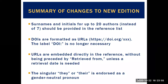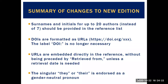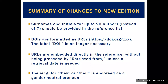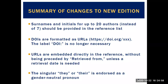In the reference list, you want to put names and initials for up to 20 authors, instead of the previous limit of seven. So while you can shorten in-text citations, at the end of the paper you list all authors up to 20. After that, you can use 'et al.' DOIs, the digital object identifiers, are now formatted as URLs. URLs are embedded directly in the reference without needing 'Retrieved from' in front of them, unless a retrieval date is needed. APA also prefers gender-neutral pronouns — they and their — instead of he or she, as it's more inclusive language.